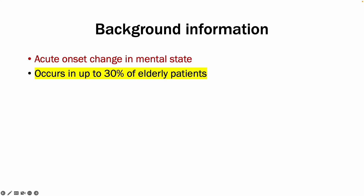Hi everyone. This video will give you a brief overview of delirium and will help you understand how to differentiate delirium from dementia. For some background information, delirium is the acute onset change in a patient's mental state and it can occur in up to 30% of elderly patients.